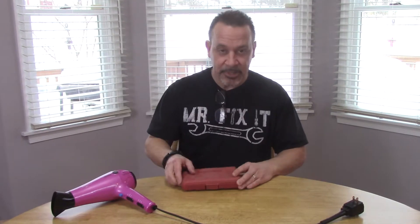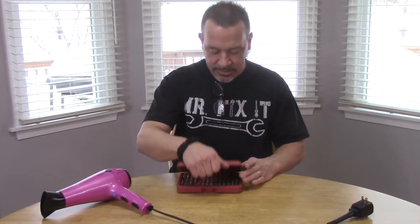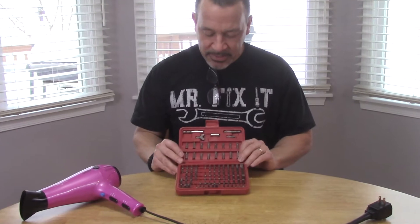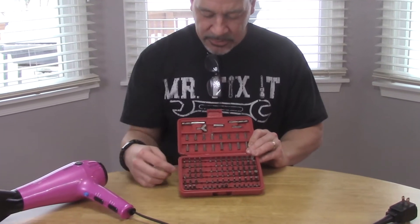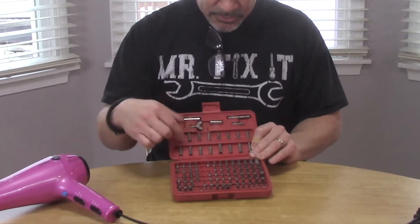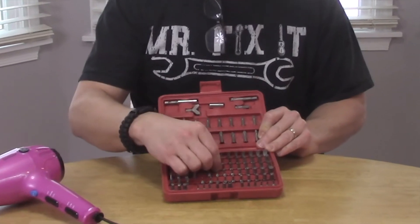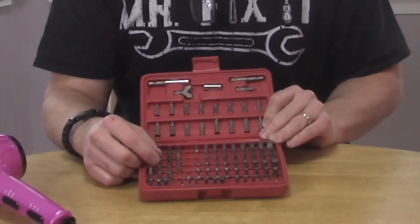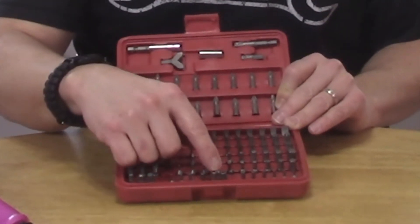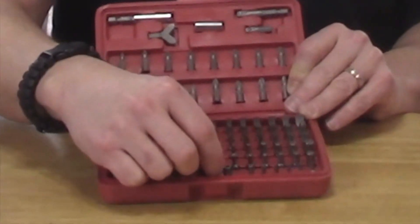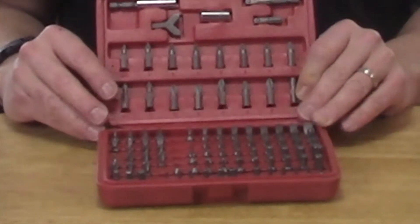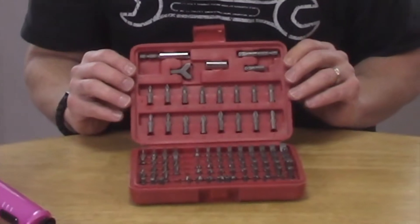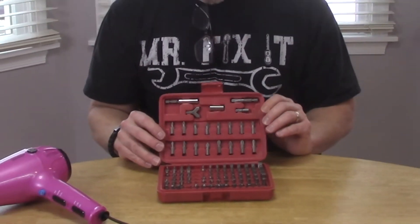A little tool kit I picked up years ago at Harbor Freight is this, it's called a security bit set. It has all different kinds of screwdriver tips and there's triangle ones in here as well as torx or the little star bits. You have some Allen bits with the little holes in them. This kit was really cheap and I've used it, I can't even tell you how many times.